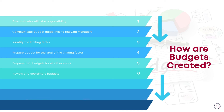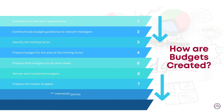The final steps of the process involve preparing master budgets, which is usually the income statement, balance sheet, and cash budgets. It also involves communicating the results to leadership, senior management, and ultimate beneficiaries of the organization. Once budgets are approved, the process moves towards implementation and monitoring of performance.